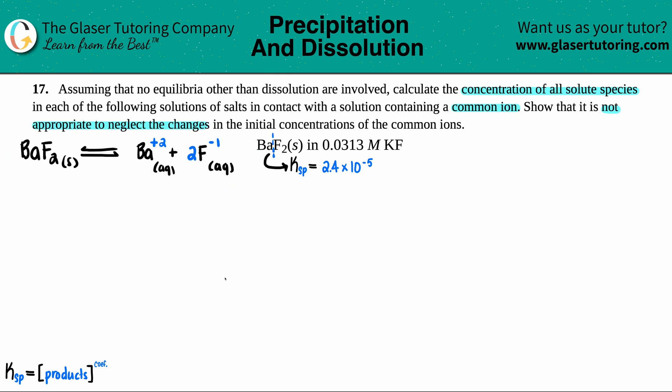I'm just going to use it to find my KSP equation. Remember, we've done tons of problems already, right? KSP just equals the products, raised to the coefficients. So the KSP here would be equal to Ba2+ times the F-. And we just have to raise it to its coefficients. There is only one barium. So I don't have to raise that to anything. But the fluorine, there's a two in front of here. So I have to raise the fluorine to the second power. We know that the KSP is 2.4 times 10 to the negative fifth. But I don't know what these concentrations are.